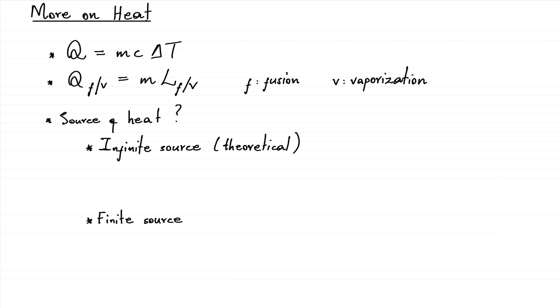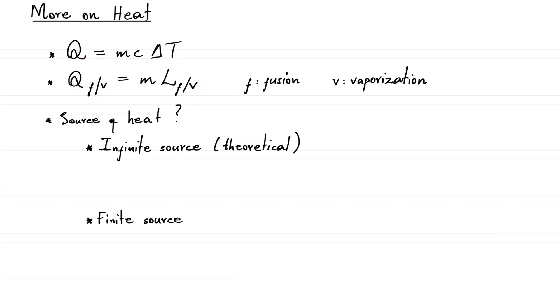That's a brief summary of what we've done so far. However, we hadn't spoken about the way we supply heat. We were concerned about the amount of heat supplied, how much temperature change it effects, and how much heat is required to change phase. We didn't spend a lot of time talking about where this heat is coming from. Typically there are two sources, which I've categorized in two ways.